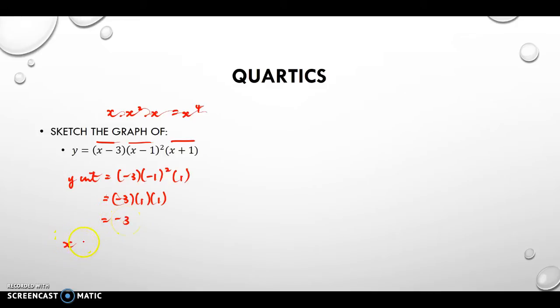My X intercepts will equal 3, 1, 1, and negative 1. Now interestingly, we have what's called singles at the first and the last one, and this middle term here is a double. And I'll show you what that does here.